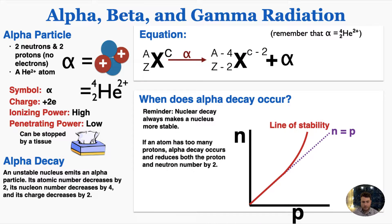We'll start with alpha particles and decay. Alpha particles have two neutrons and two protons and no electrons. This means they're helium nuclei with a plus two charge. The symbol for an alpha particle is the Greek letter alpha, and the charge is positive two. Alpha particles have the highest ionizing power, which means they have the most ability to strip electrons off of other atoms. That means they're the most dangerous to humans, because the more ionizing power, the more capable the radiation is of damaging our DNA. They have low penetrating power, however. They can be stopped by something as thin as a tissue.